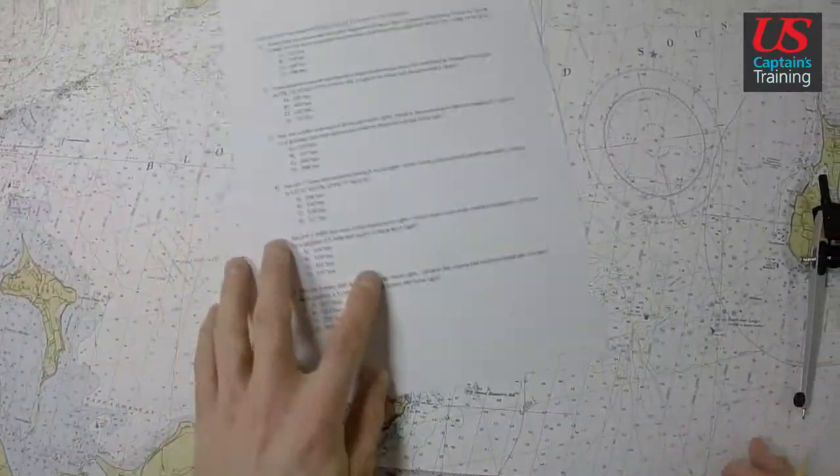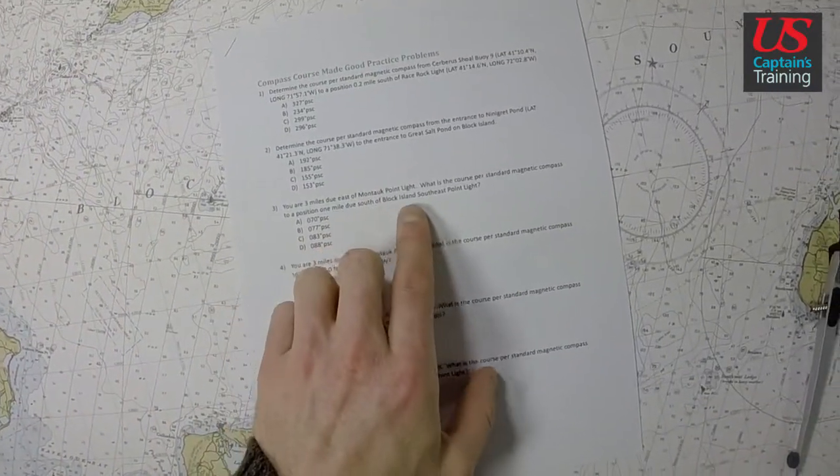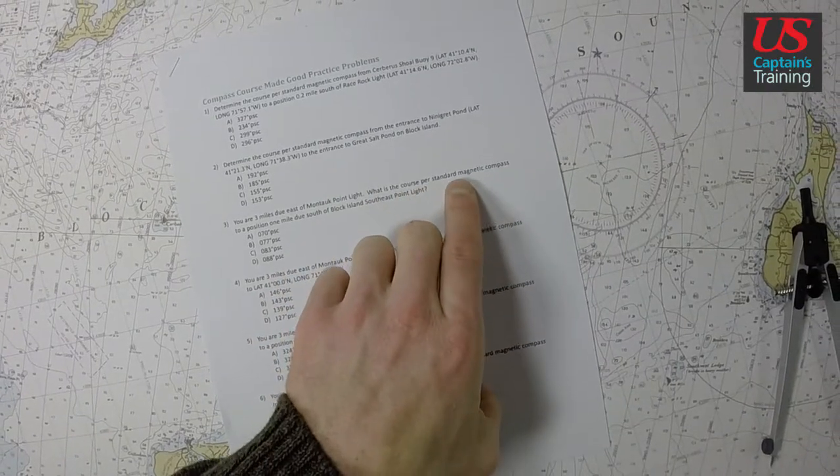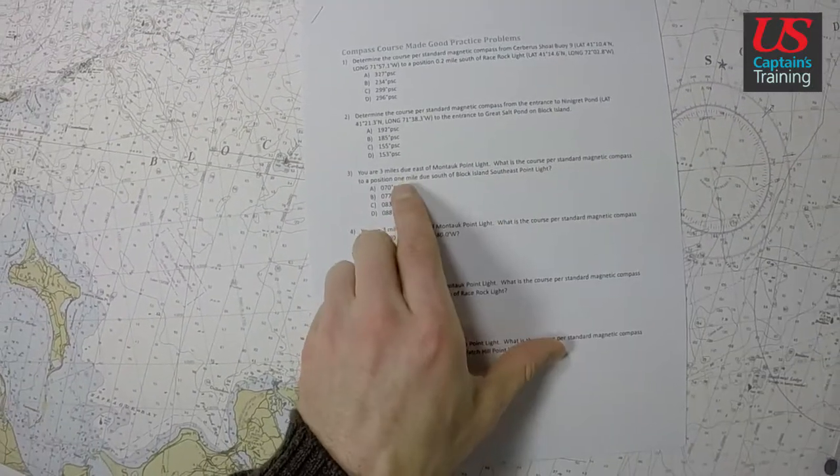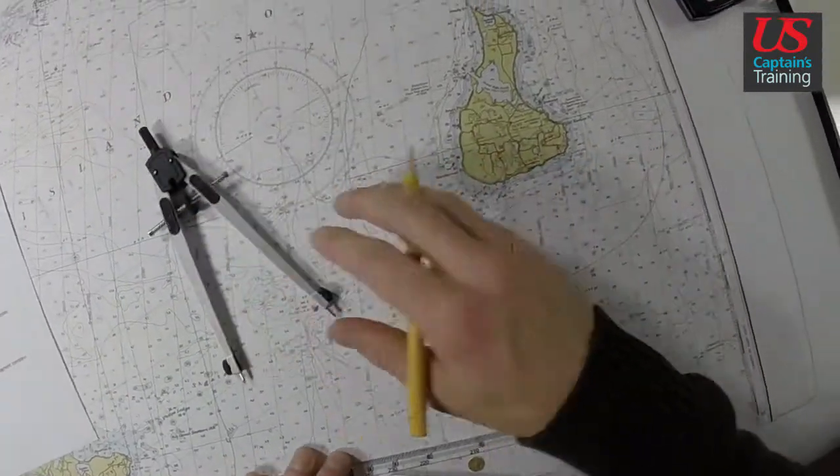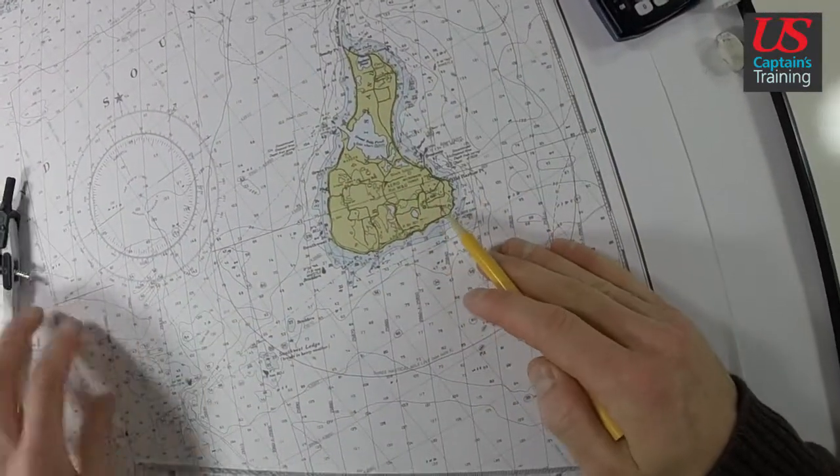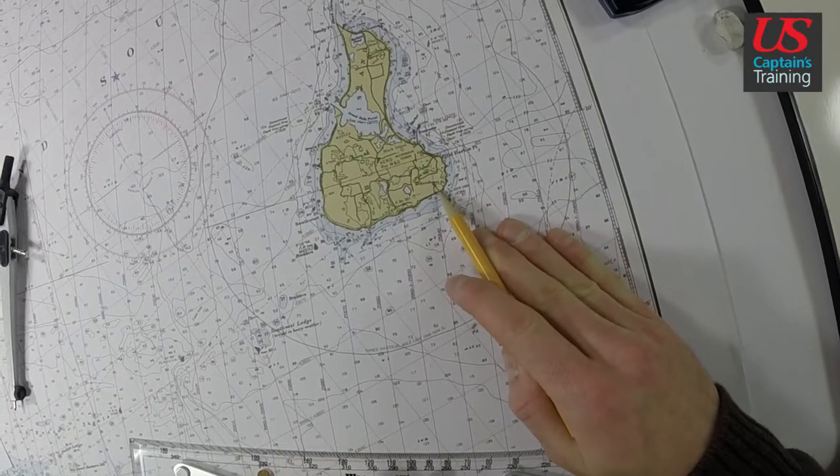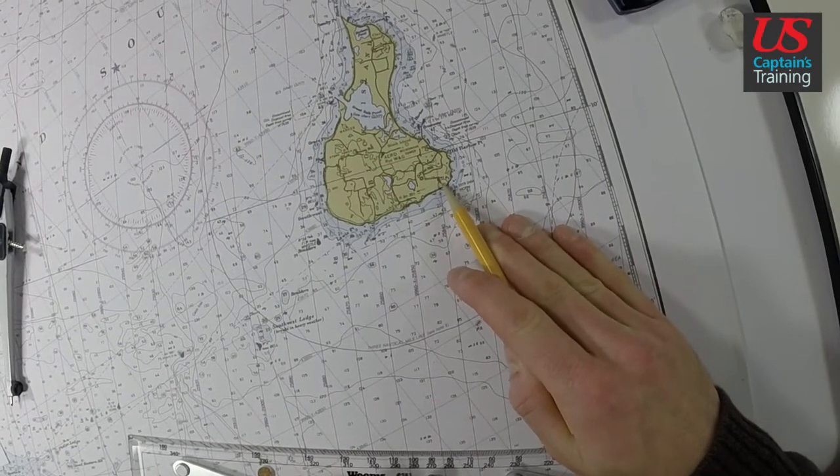And our ending point, it said, what is the course per standard magnetic compass to a position 1 mile due south of Block Island Southeast Point Light? Come to Block Island. Southeast corner is Southeast Point Light. Again, filled in dot with a flare.